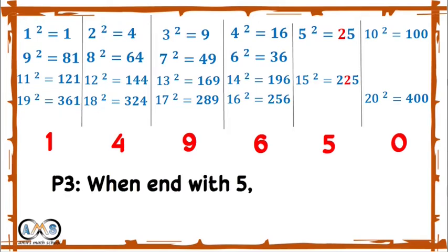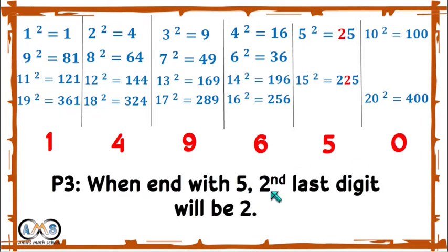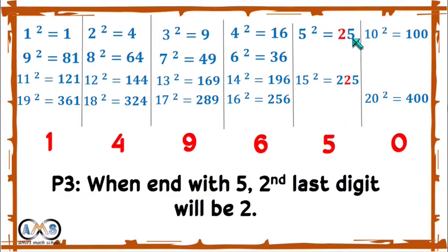When any perfect square number ends with 5, the second last digit must be 2. For example, 25 is a perfect square number — it ends with 5 and the second last digit is 2.